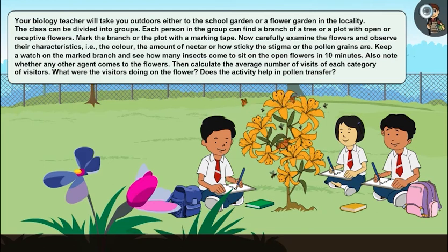Mark the branch or the plot with a marking tape. Now carefully examine the flowers and observe their characteristics—that is, the color, the amount of nectar, or how sticky the stigma or the pollen grains are.